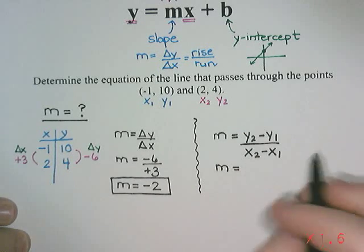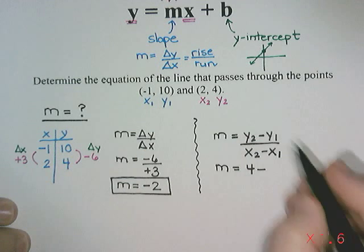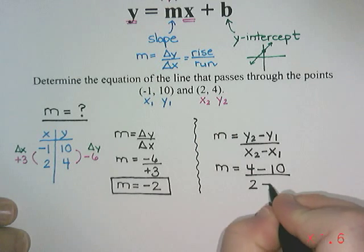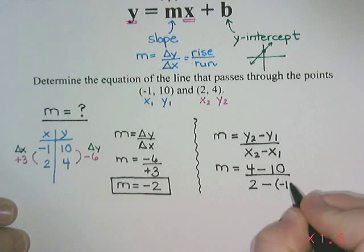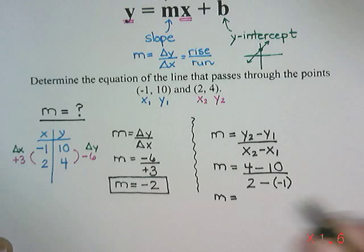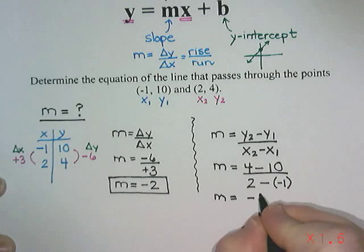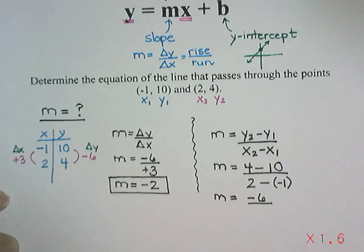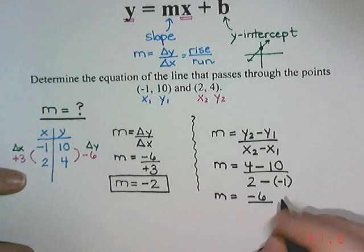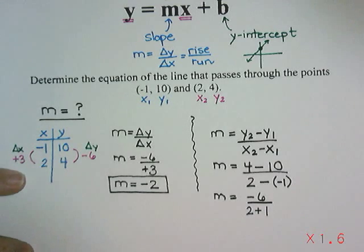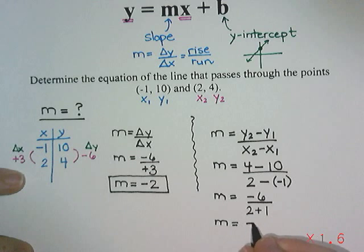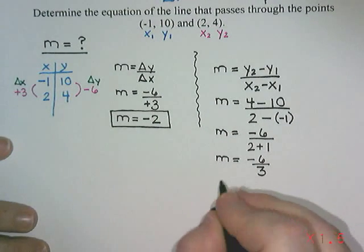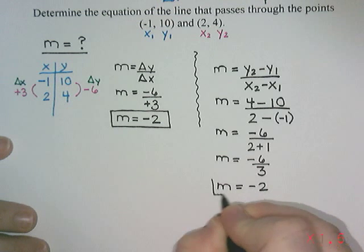So what I'm going to do is take those numbers and put them into the formula. So y2 is 4 take away y1 which is 10. And then x2 is 2 take away x1. Oh that's a negative one. So I need to put that in a bracket there. So 4 take away 10 is negative 6. 2 take away negative 1. When I have two negative signs in a row they actually combine to make a positive. So this is going to become 2 plus 1. And 2 plus 1 is 3. So I get negative 6 divided by 3. I feel like we've seen that before. And then negative 6 divided by 3 is negative 2.